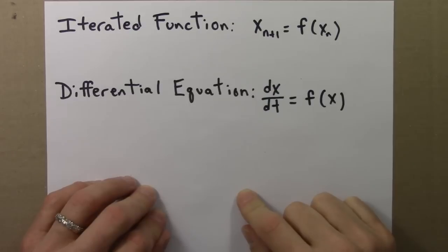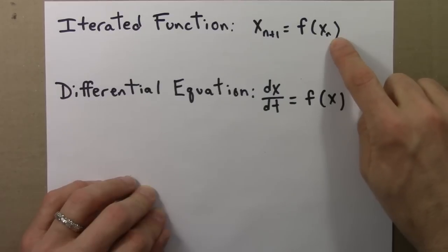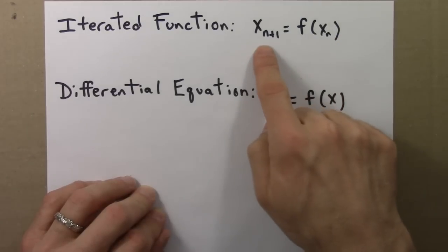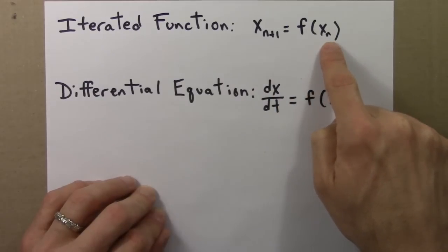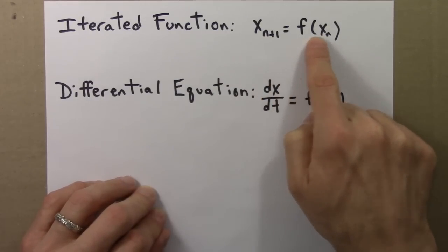I'll introduce differential equations by comparing them to iterated functions, the first type of dynamical system we studied. Here's an iterated function. This notation makes it clear that we need an initial value, and then we can always get the next value by applying the function to the current value. So the next value in the orbit or itinerary is a function of the current value, and this function will likely have different values depending on what the current value is.